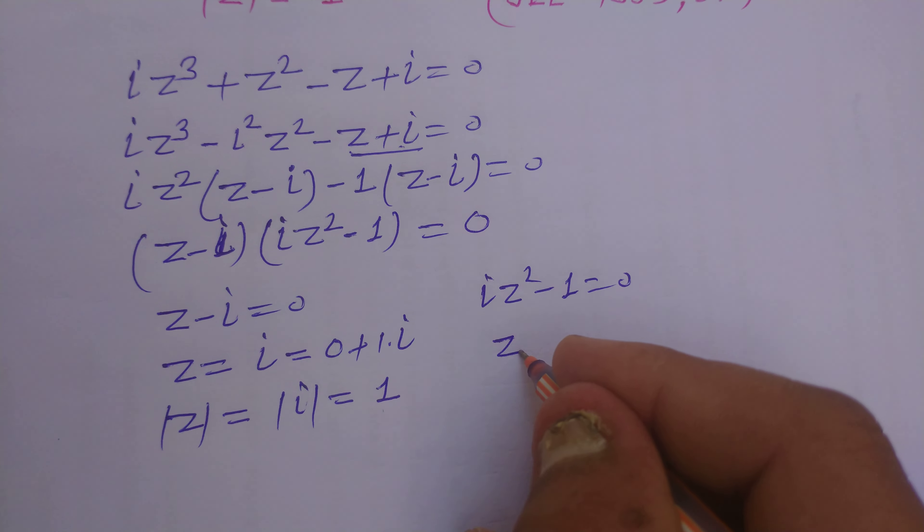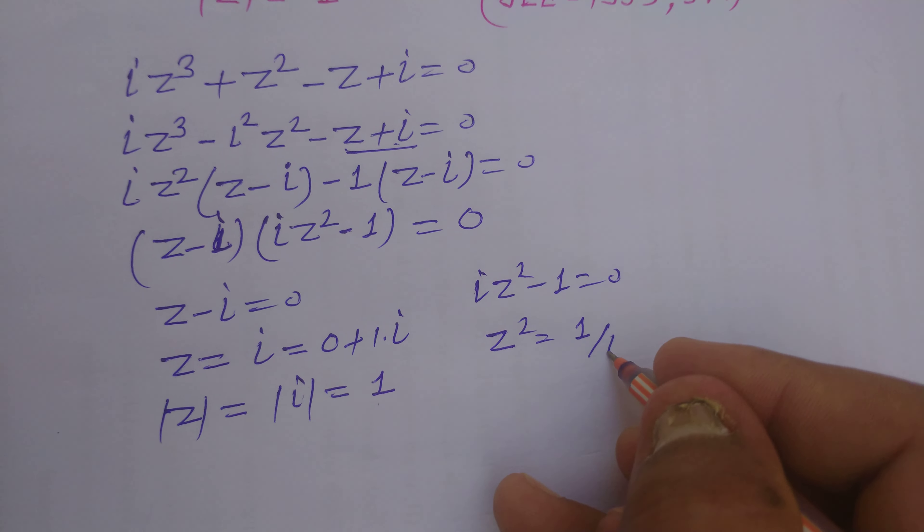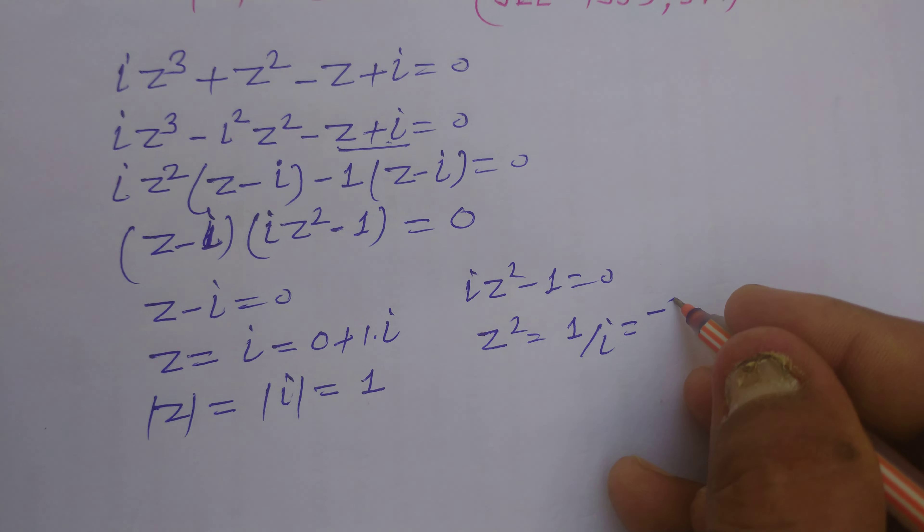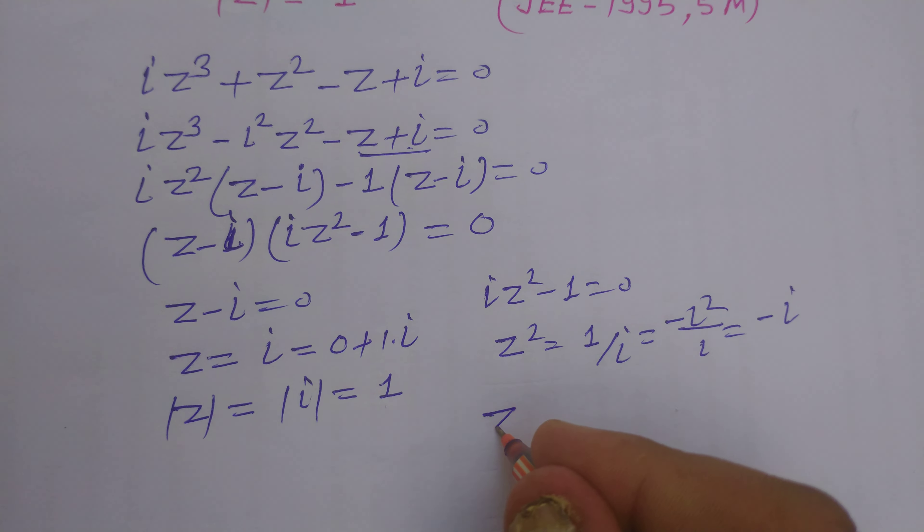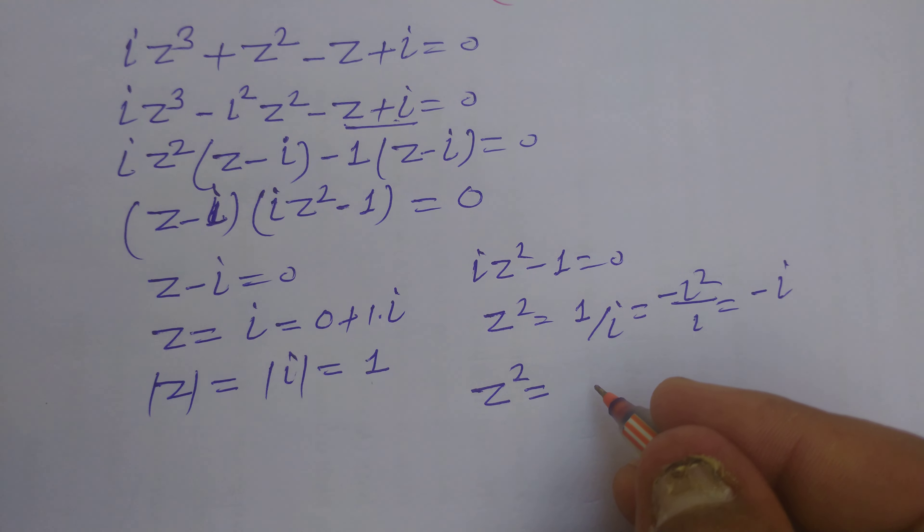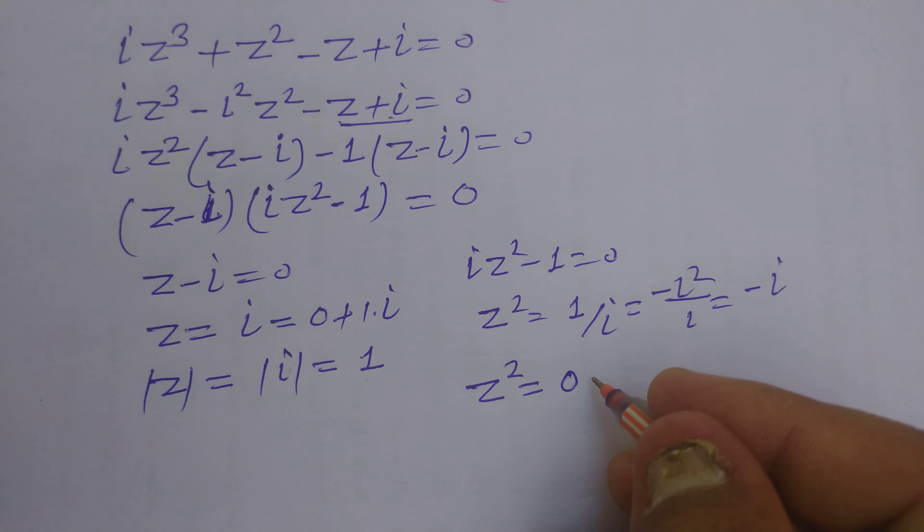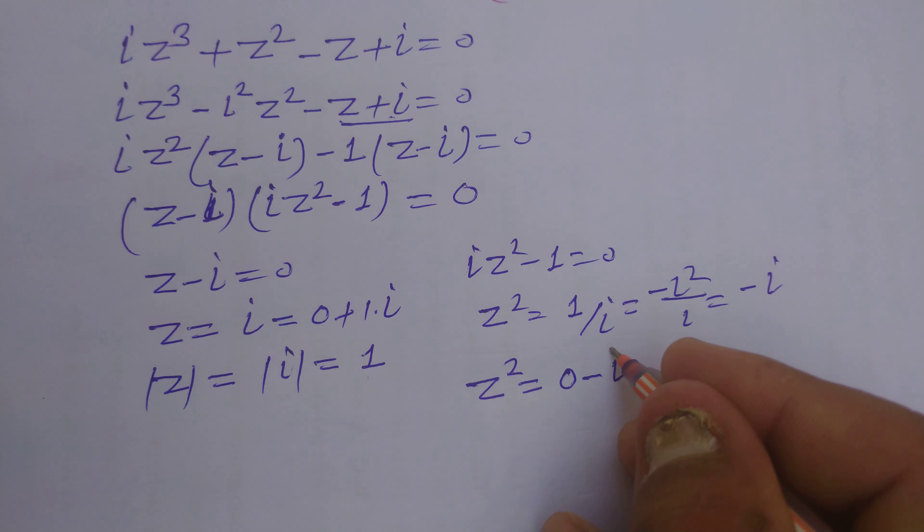So z squared equals 1 upon iota or we write it as minus iota squared upon iota. This is minus iota. So z squared equals minus iota means 0 minus iota.